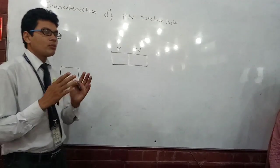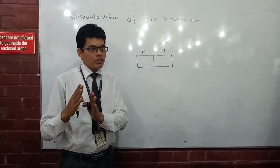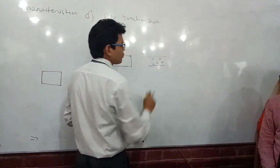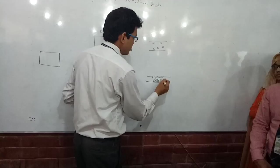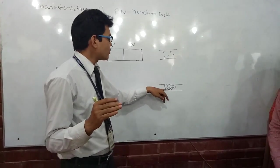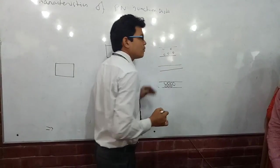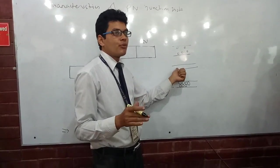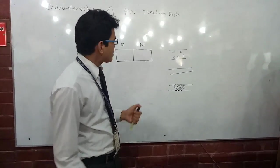Silicon is a semiconductor, which means it has conduction ability in between an insulator and a conductor. A conductor has a huge amount of space for electrons to flow through it, but an insulator is so rigid that it doesn't allow electrons to pass through. A semiconductor lies in between — its resistivity means it sometimes behaves as an insulator and sometimes as a conductor.